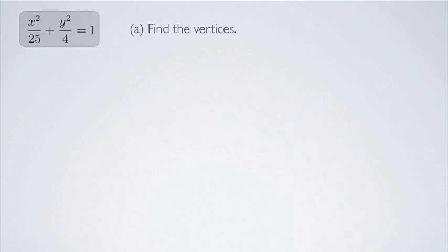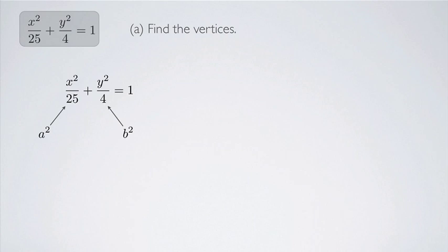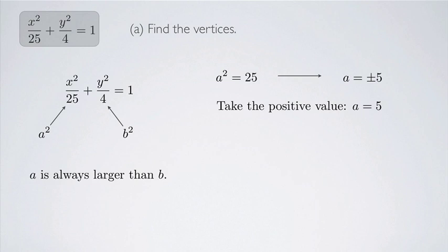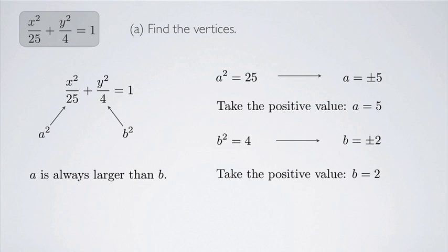First let's find the vertices. Rewriting the equation, we note that a² = 25 and b² = 4. Since a is always larger than b, the larger denominator is a² and the smaller is b². So a² = 25 means a = 5, and b² = 4 means b = 2, taking the positive values in each case.